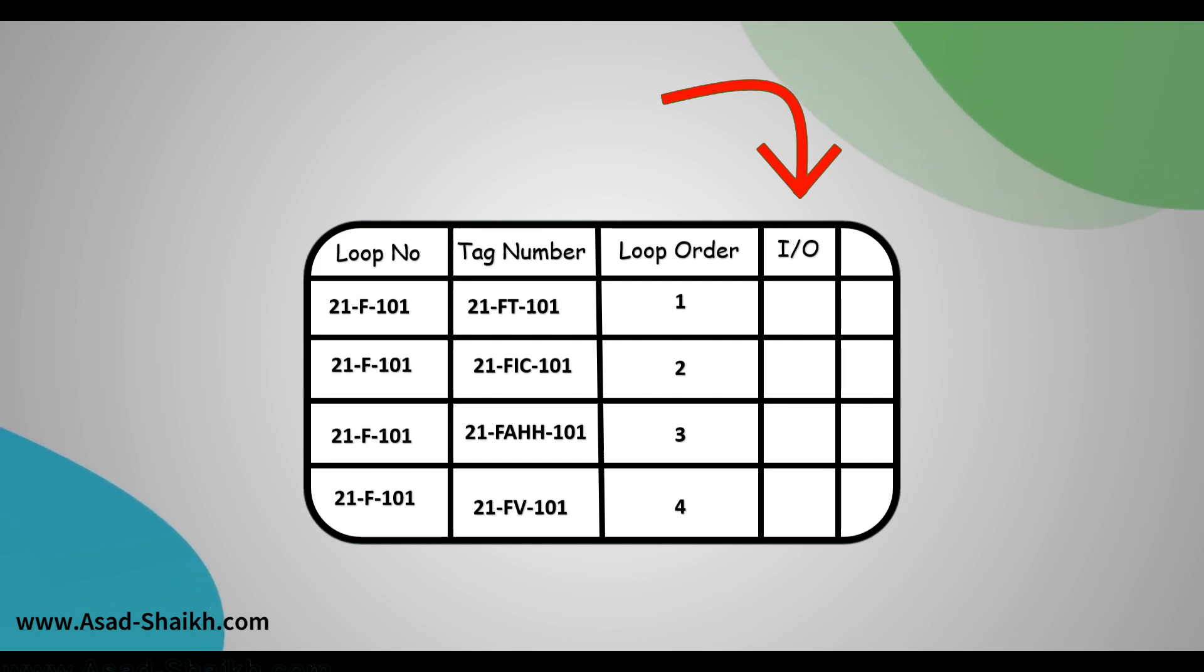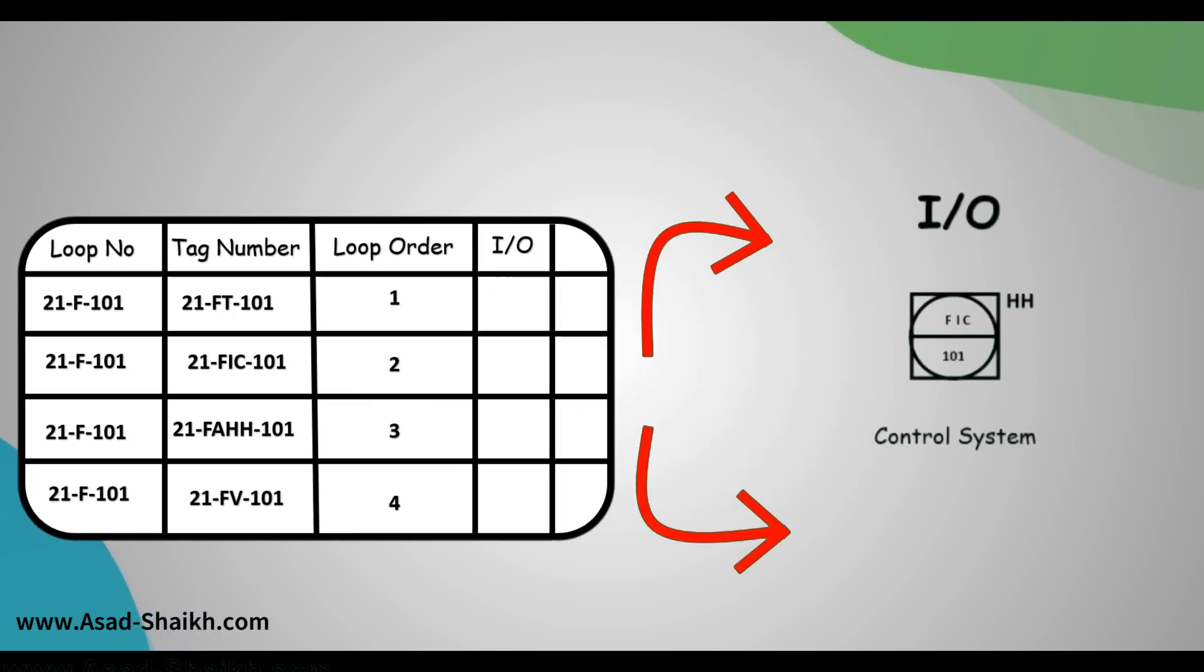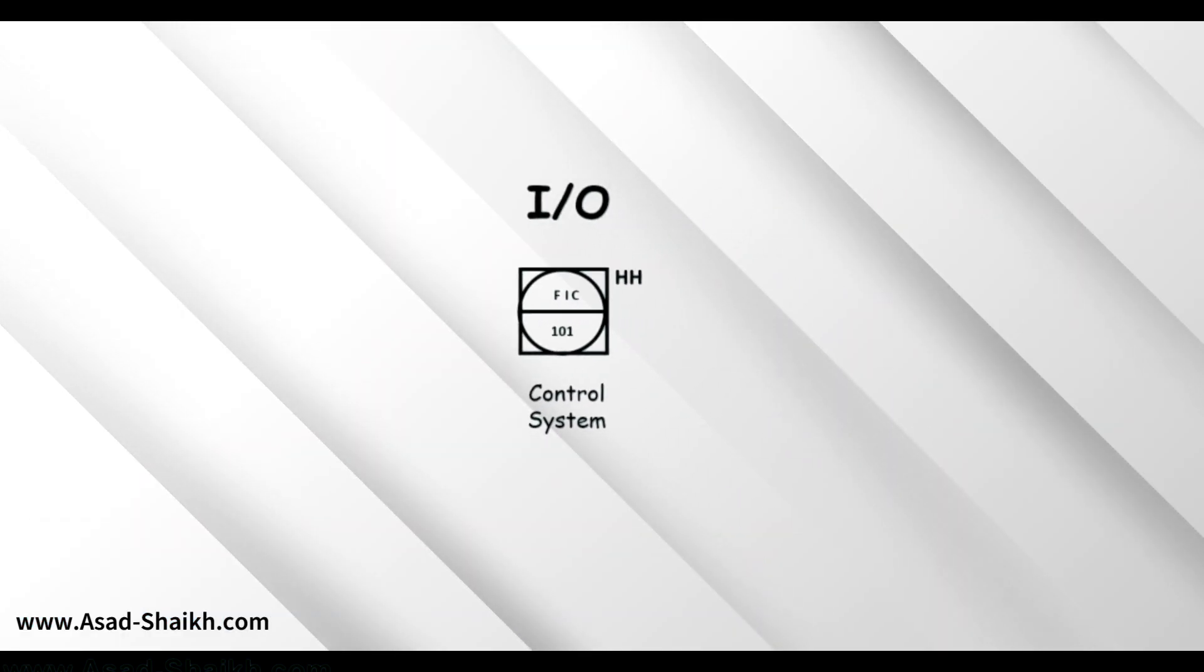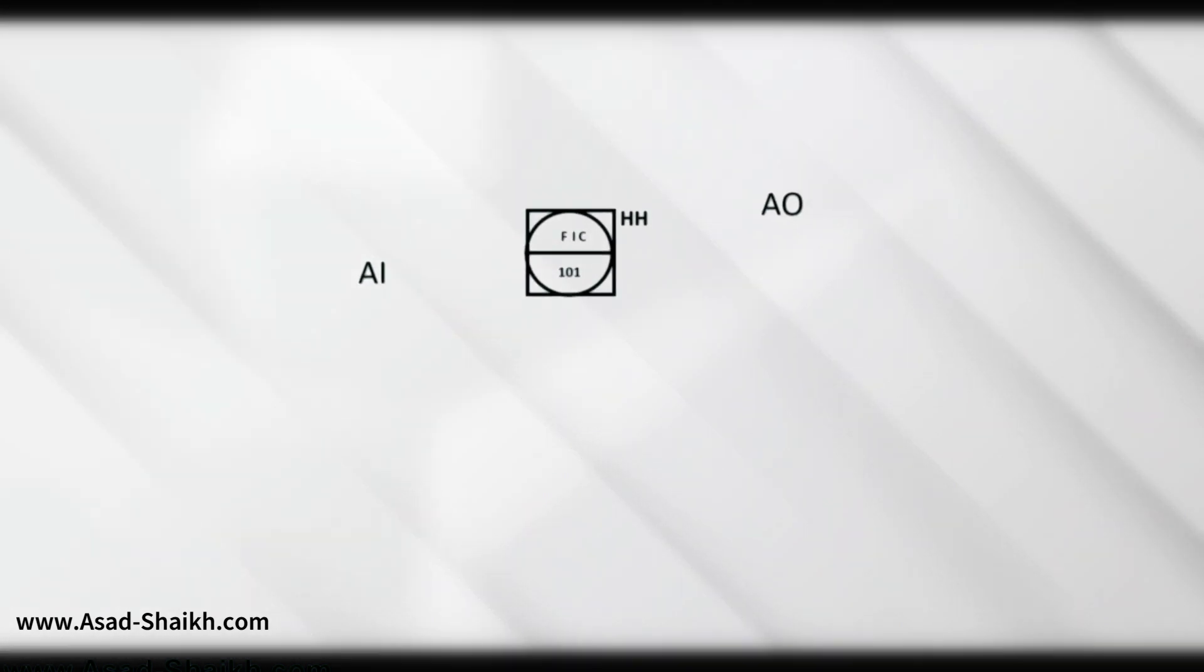Then you have the next important thing which is the I/O available. The I/O is only about control system at the center of the focus. Anything that enters into the control system will be considered to be an input. Anything that goes out of the control system will be considered to be an output. And for example if an analog signal enters here it will be called as an AI. If a digital signal enters it will be called as DI digital input. Similar is for AO and DO analog output and digital output.